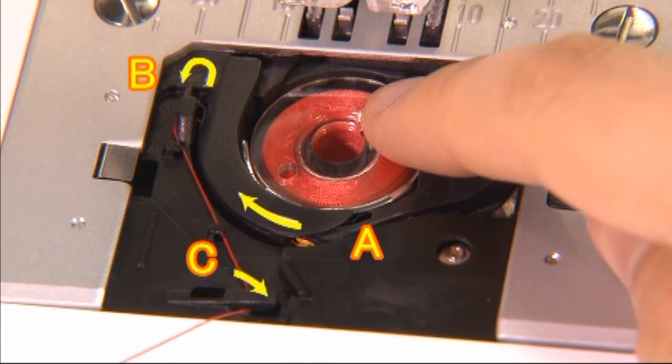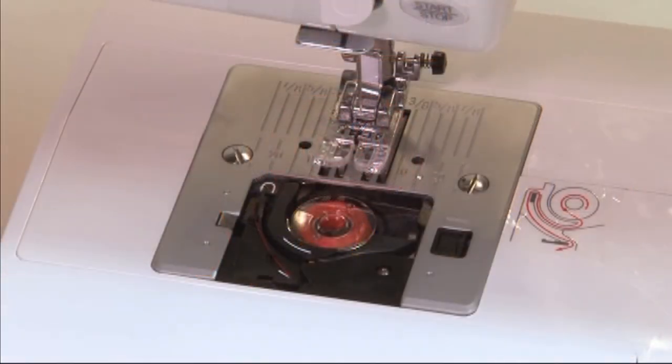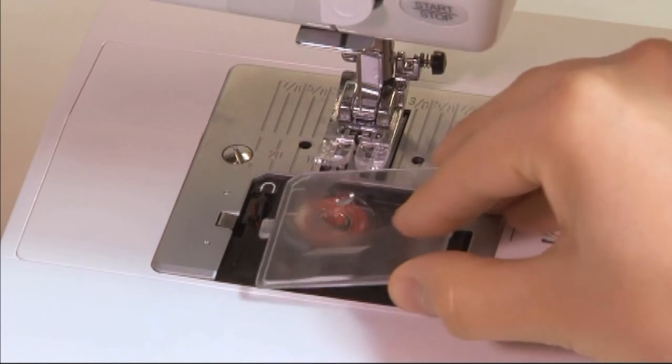To cut off excess thread, pull the thread back over the cutting off blade at point C. Close the bobbin cover plate.